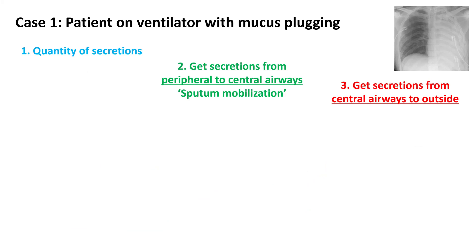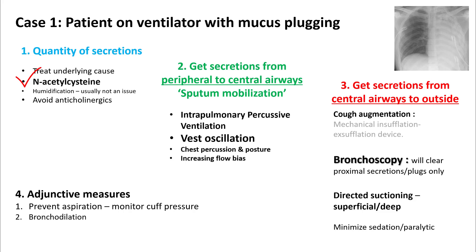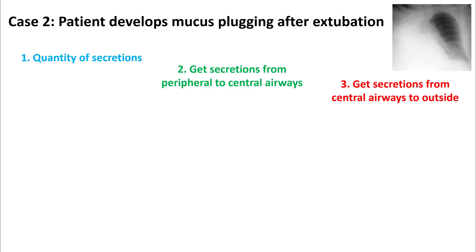In ventilated patients with mucus plugging, the first step is to get rid of central secretions using either bronchoscopy or directed suctioning. Once you have cleared central secretions, you can use N-acetylcysteine if secretions are thick. Remember that bronchoscopy and directed suctioning cannot remove secretions from peripheral airways. So make sure you perform sputum mobilization using VEST oscillation, intrapulmonary percussive ventilation, chest physical therapy, and postural drainage or increasing flow bias. Ensure that sputum coming from peripheral airways is regularly suctioned out. Repeated bronchoscopies are usually not necessary.